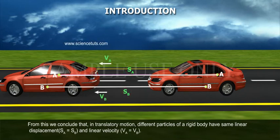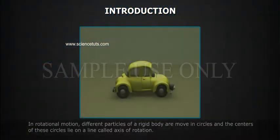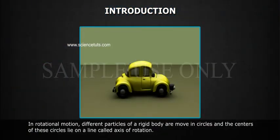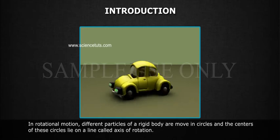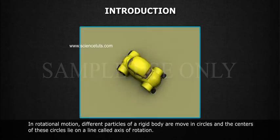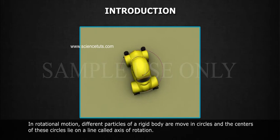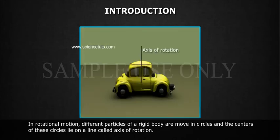VA is equal to VB. In rotational motion, different particles of a rigid body are moving in circles, and the centers of these circles lie on a line called axis of rotation.